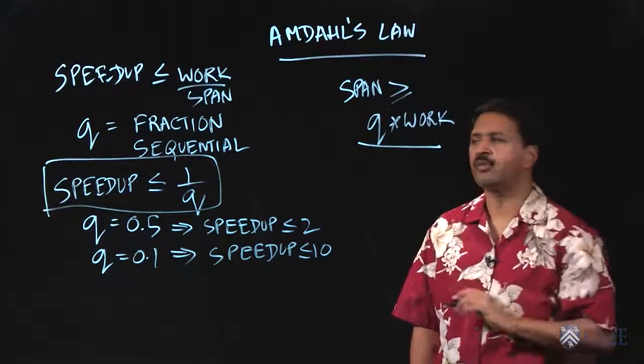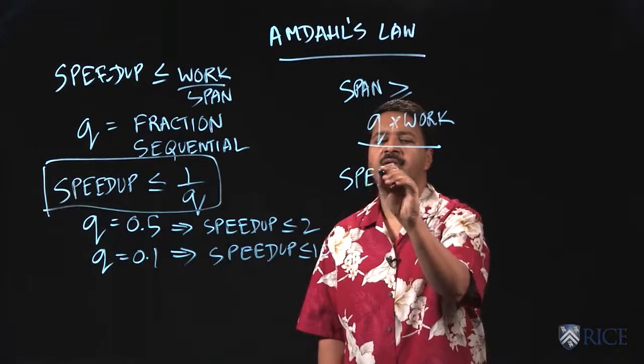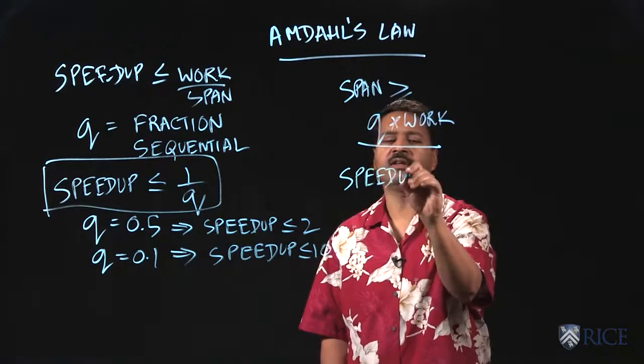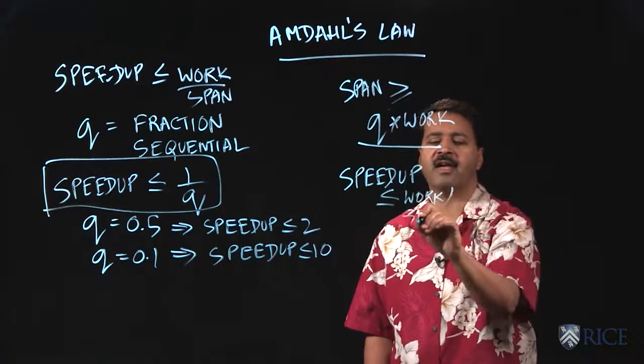Now, if we have that, we can use the identity that we already have, which is an inequality that says speedup less than equal to work divided by span.